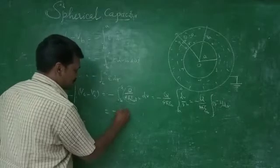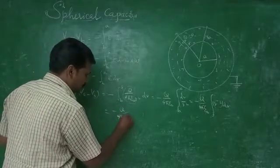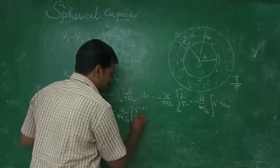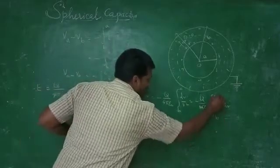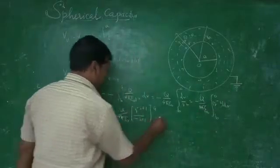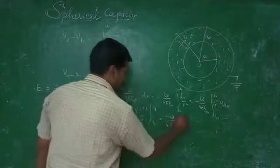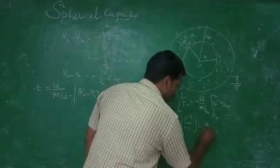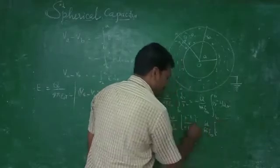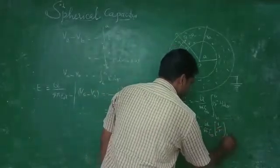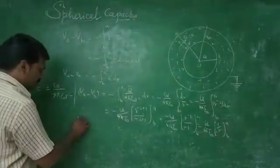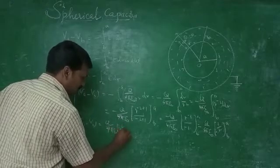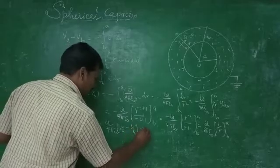Evaluating the integral, we integrate r to the power minus 2, giving r to the power minus 1, which is 1/r. Applying the limits, the upper limit gives 1/a and the lower limit gives minus 1/b. This gives Va minus Vb equal to q over 4 pi epsilon times (1/a minus 1/b). This is equation number 1.